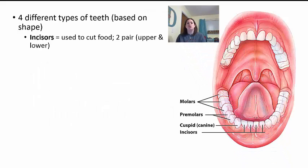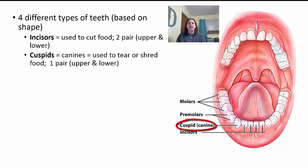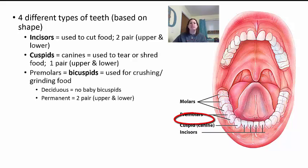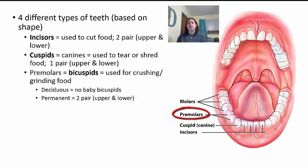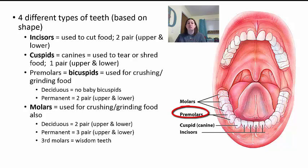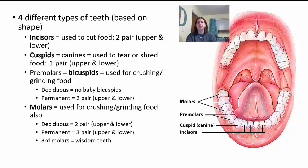There are four different types of teeth based on shape. The incisors are the frontmost teeth used to cut food — two pairs upper and two pairs lower. The cuspids are your canines, used to tear or shred food — one pair upper and one pair lower. Your canines are your little sharp teeth. The premolars, or bicuspids, are used for crushing and grinding food. In baby teeth there are no bicuspids, but in permanent teeth you have two pairs upper and two pairs lower — that's eight total, which accounts for going from 20 to 28. The molars are also used for crushing and grinding. In baby teeth you have two pairs; in permanent teeth, three pairs — the third pair being your wisdom teeth.